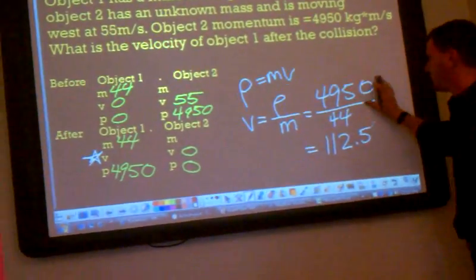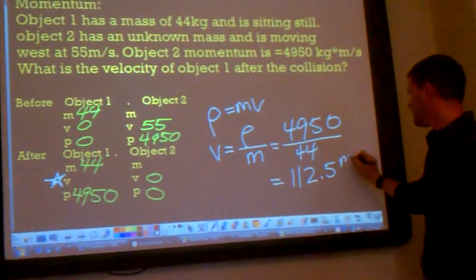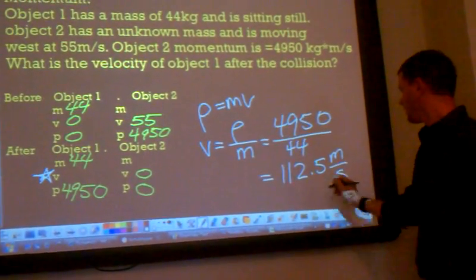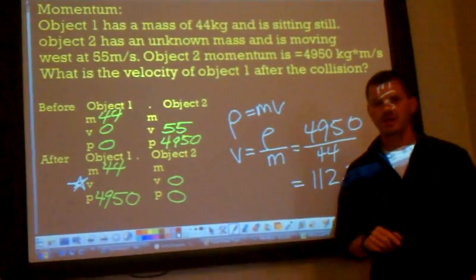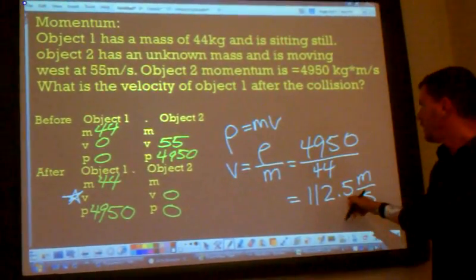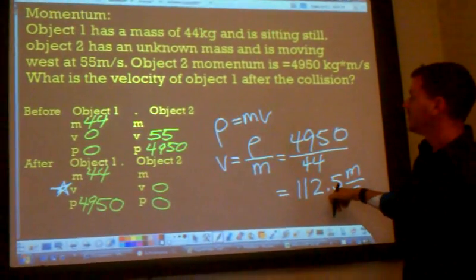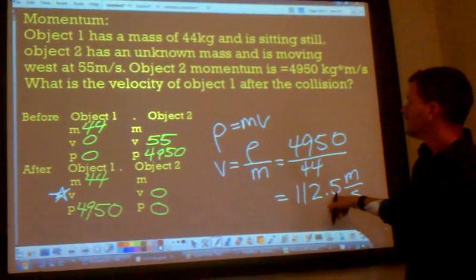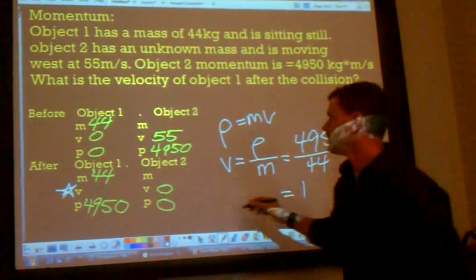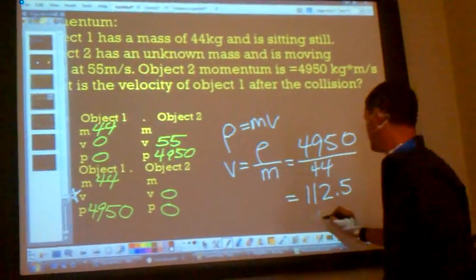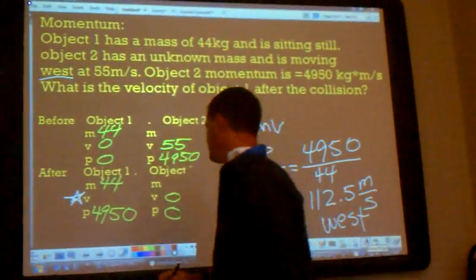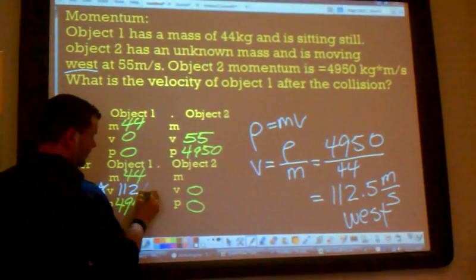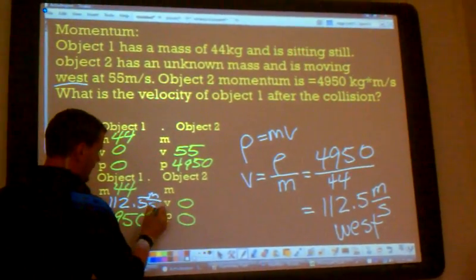Now if we put our units in here we should be able to cancel out the image to see that this is meters per second. And we need direction. We need direction with momentum and we need direction with velocity. For momentum our direction is west. For velocity and for momentum. This direction is west. So 112.5 meters per second west.